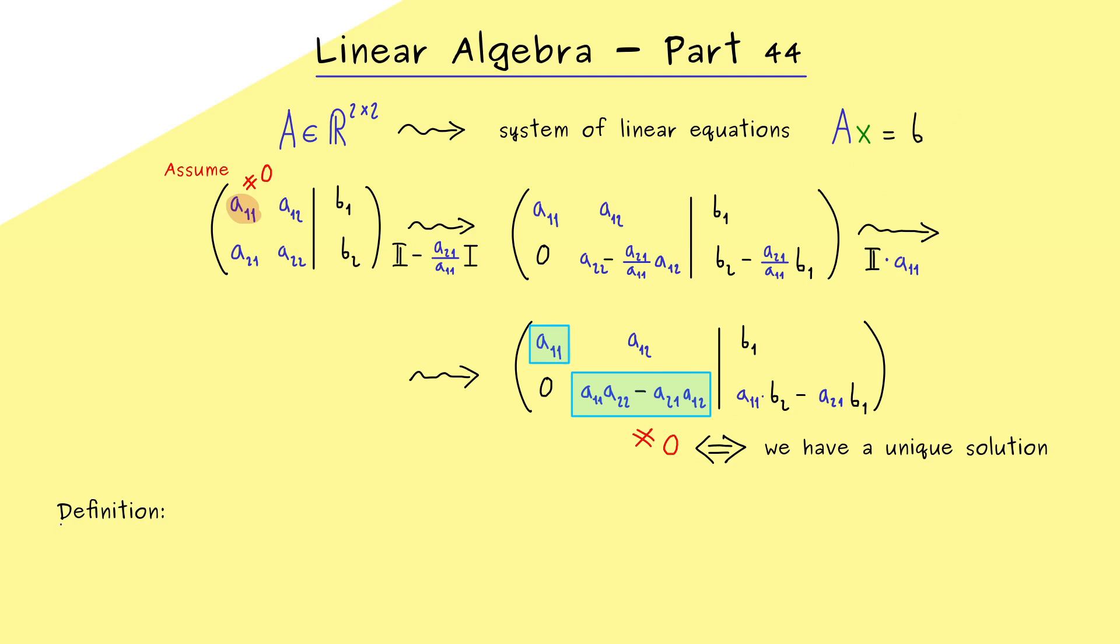Therefore this number is very important and we will call it the determinant of the matrix. As a comment, please note the assumption at the beginning was not really a restriction for the end result here. For example, we would also get that if we assume that a₂₁ is non-zero, because then we just have to do a row exchange. For this reason, the number here is important for all 2×2 matrices A.